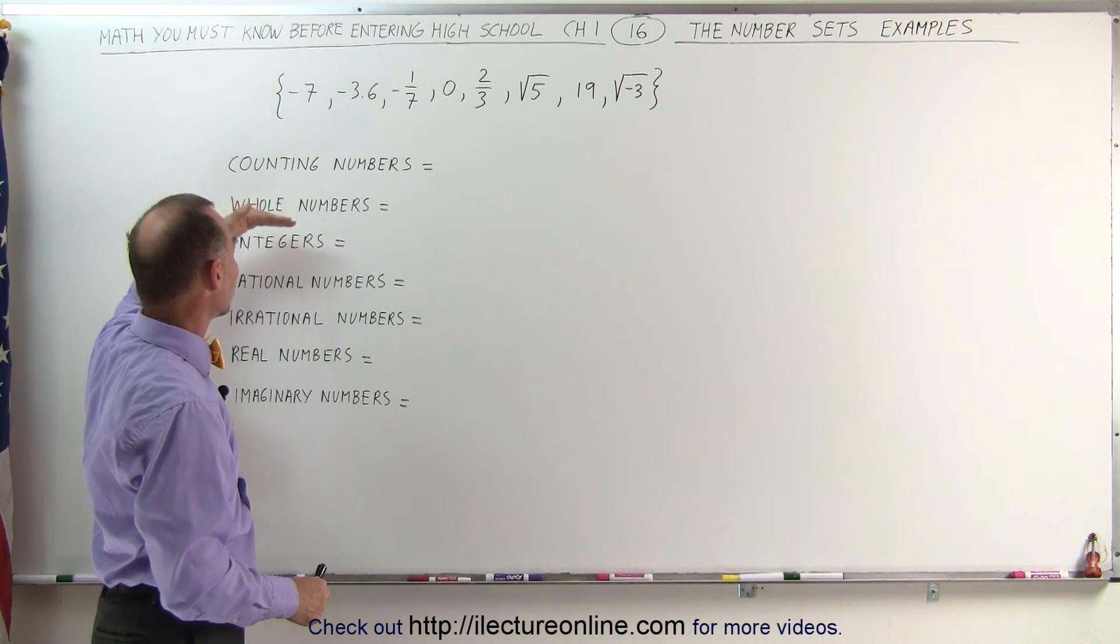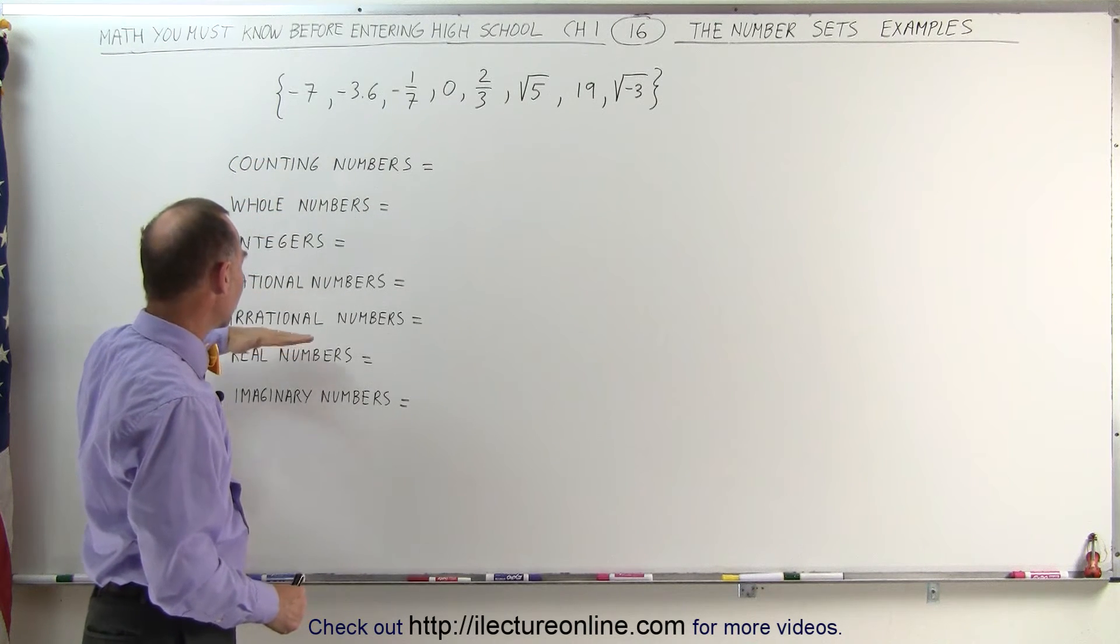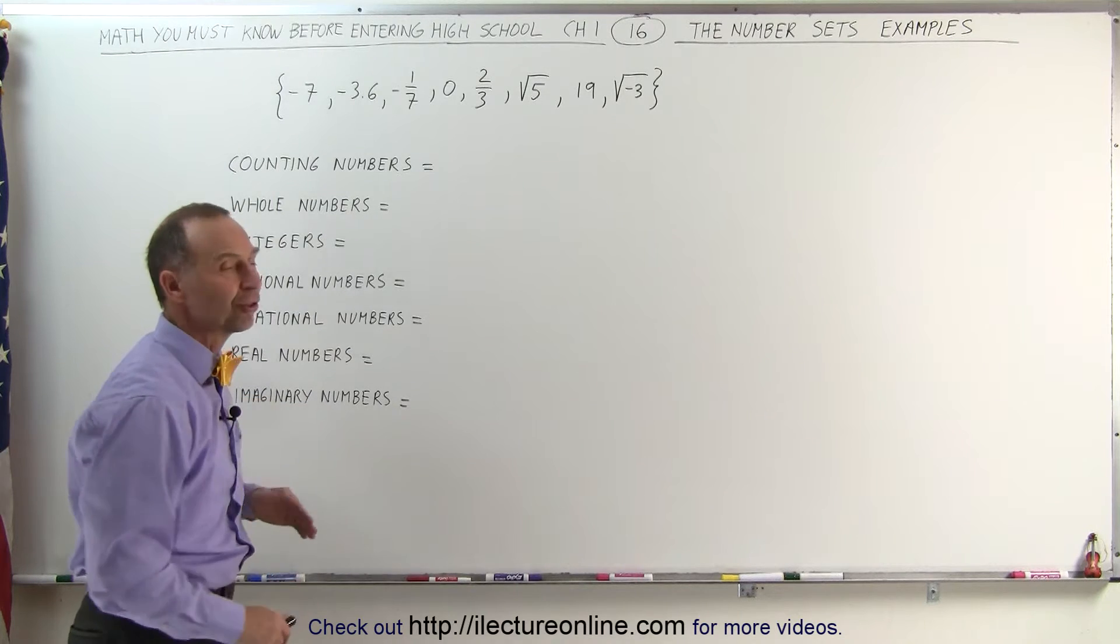Which of these numbers are counting numbers, whole numbers, integers, rational numbers, irrational numbers, real numbers, and imaginary numbers.